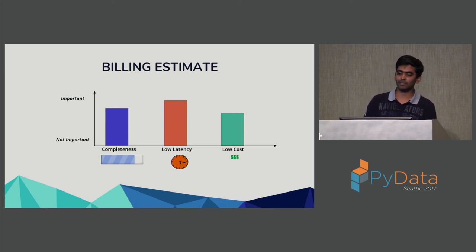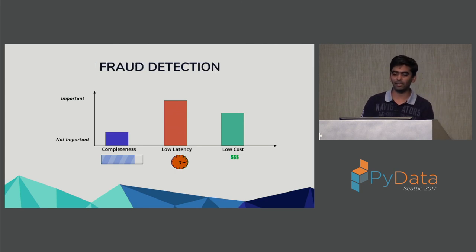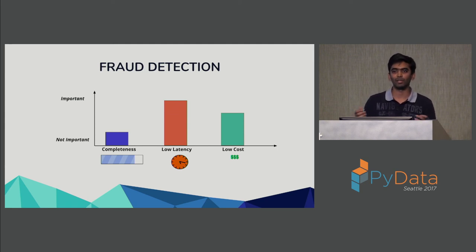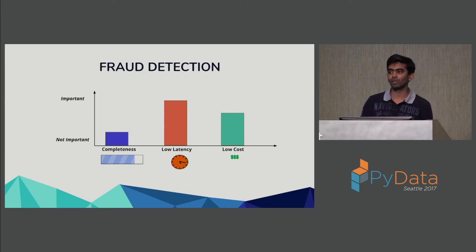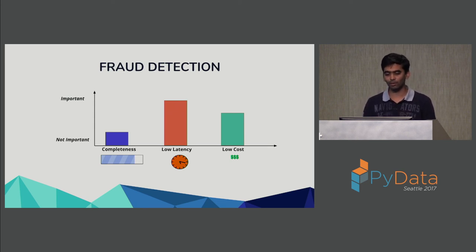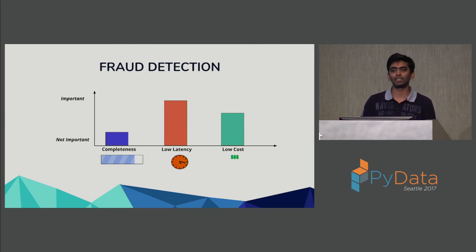Moving to a different domain — a fraud detection pipeline. Here completeness becomes much less important because you're mostly trying to minimize false negatives: catching any fraud that might have leaked through. Latency is very important because you want to catch fraud as soon as it happens — if a credit card is making transactions where it shouldn't, you want to block it immediately. Low cost is slightly less important because the cost of fraud is much higher than running the pipeline.